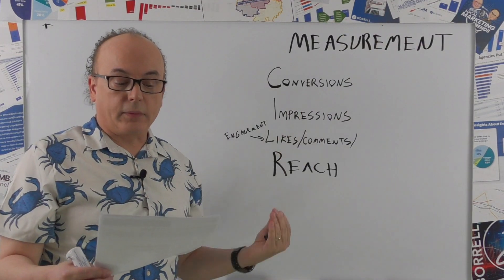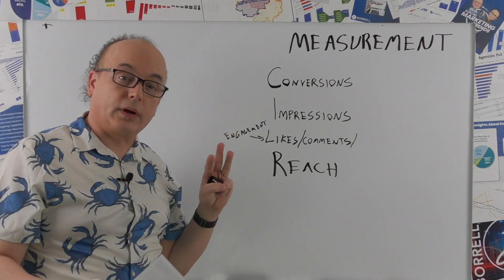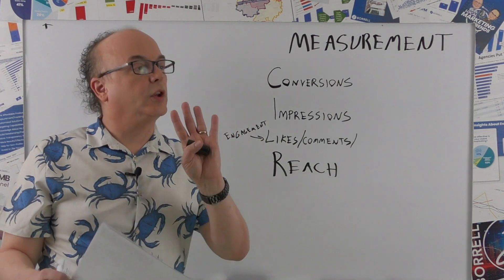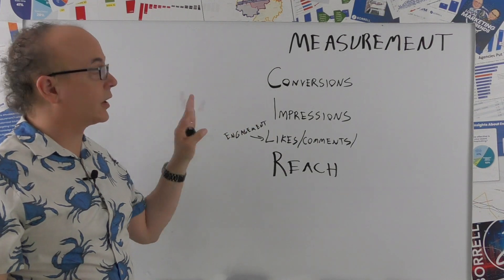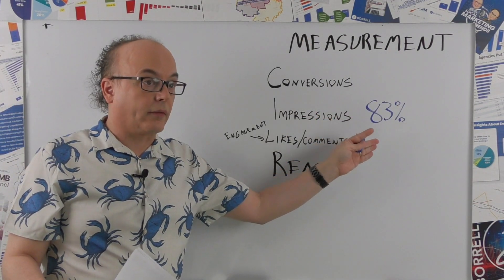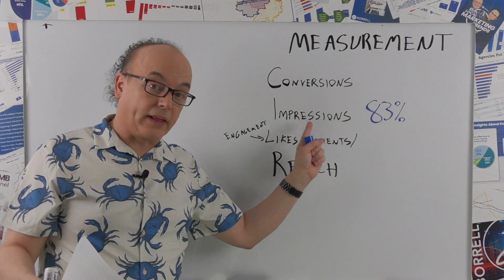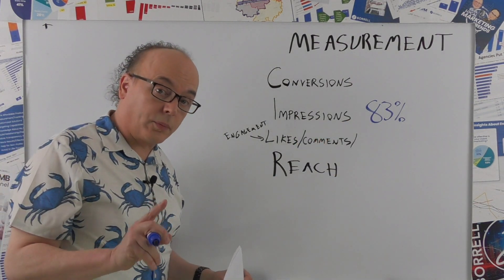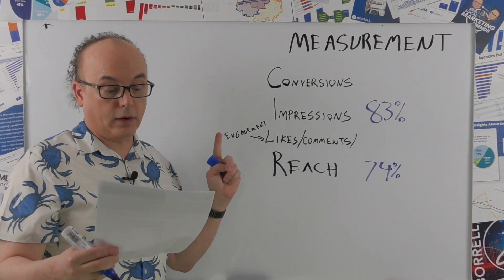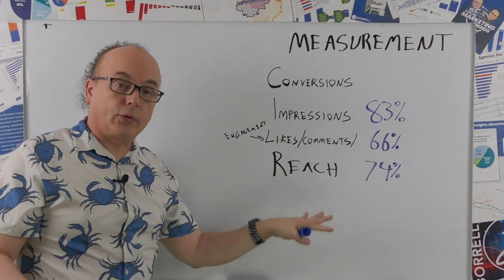The question was, which of the following metrics do you track? I only put four up here because three of these are in the top three. Let's cut to the chase. Which one was number one? Impressions. 83% of local advertisers who buy social media ads look at impressions. Then 74% said reach. And coming in at number three, likes, comments, shares, saves - engagement factors.